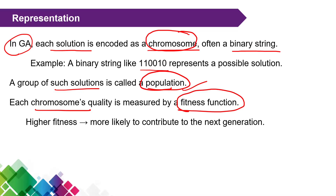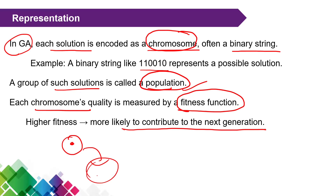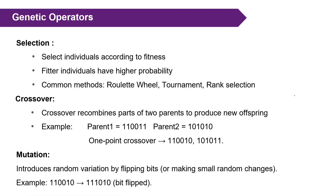The quality of each solution, that is each chromosome, is measured by the fitness function. A higher fitness value means the chromosome is more likely to contribute to the next generation. The concept of 'generations' mirrors biological genetics — from grandparent to parent, parent to child, and so on. Everything depends on the fitness value.